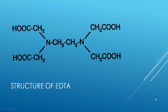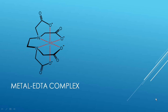EDTA is useful because of its role as a hexadentate ligand, and this is because of its having six active sites. EDTA usually binds metal cations through its two amines and four carboxylates.